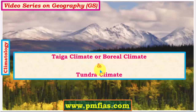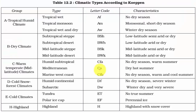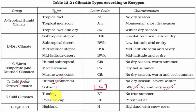Hello friends. In this video we will study about the Taiga type of climate and the Tundra type of climate. Under the Koppen Scheme of classification, the Taiga type is represented by alphabets D and W, where D stands for Cold Snow Forest Climates and W for Winter Dry type of climate. The Tundra type is represented by alphabets E and T, where E stands for Cold Climates and T stands for Tundra type, where there is no true summer.